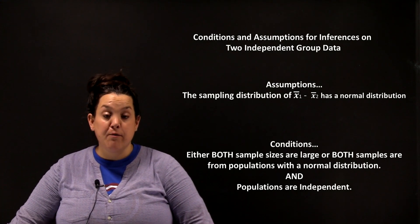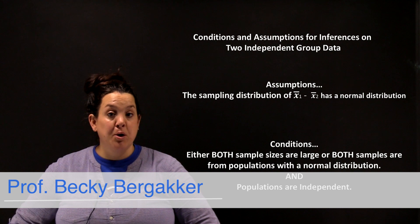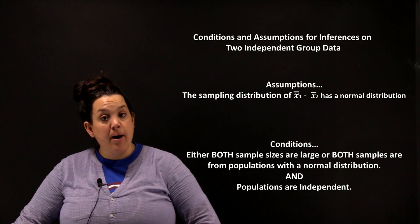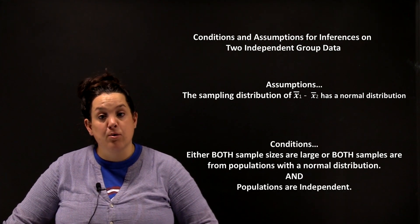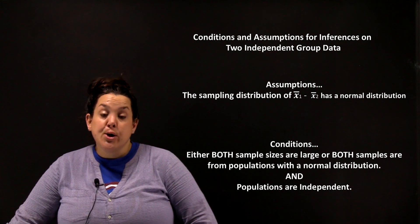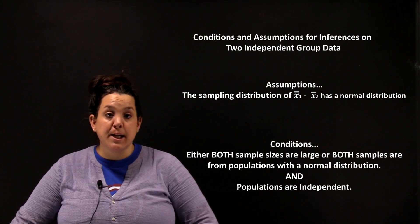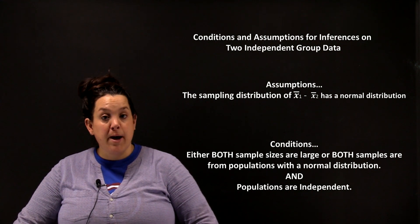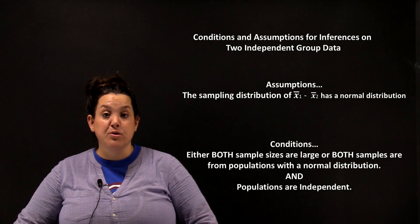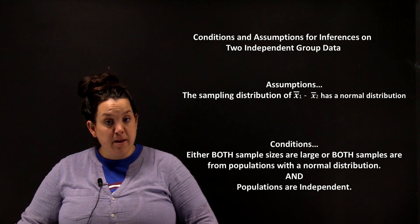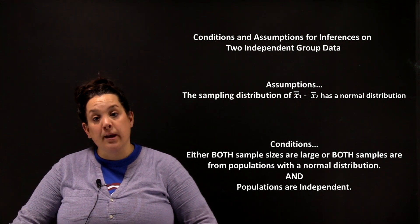Today we're going to be looking at our first form of statistical inference for two independent group data. Before we can do that, we need to talk about some of the assumptions and corresponding conditions. For this type of data, an assumption we have to make is that the sampling distribution of x-bar sub 1 minus x-bar sub 2 has a normal distribution. To verify that assumption is true, we have to do what's called checking conditions.